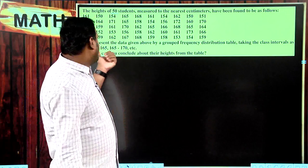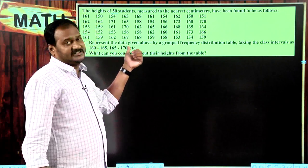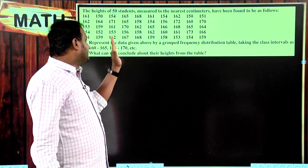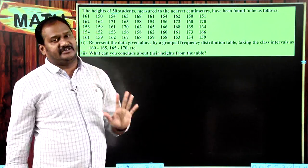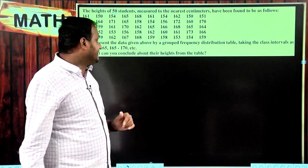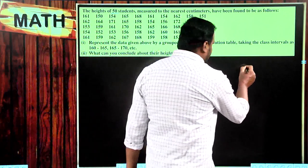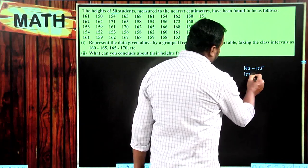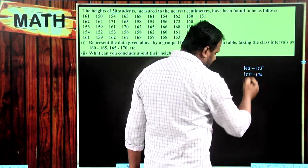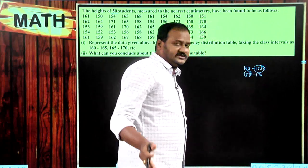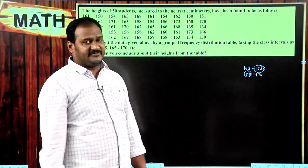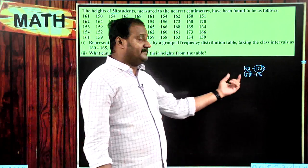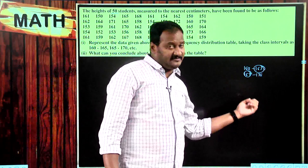One important thing you need to understand: in class intervals 160–165 and 165–170, the value 165 appears in both. If you identify 165, it belongs to the second class interval only, not the first class interval. Please do remember that.